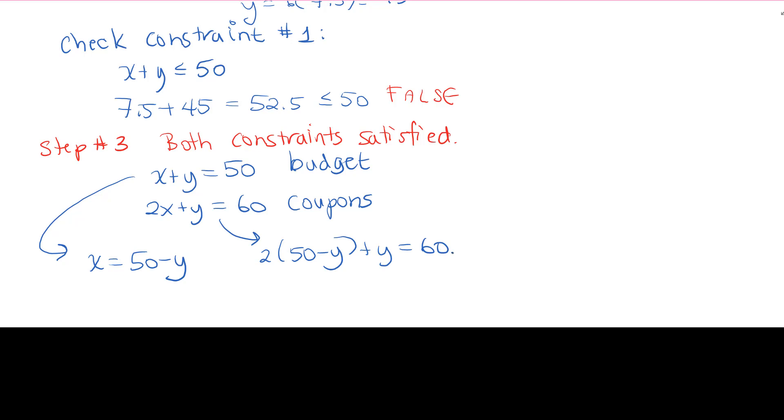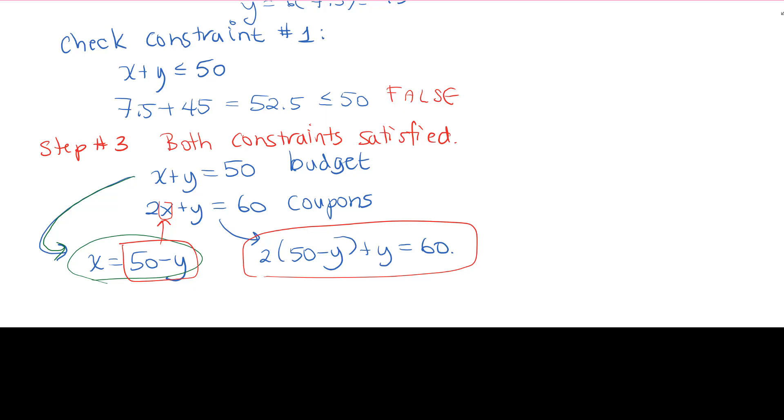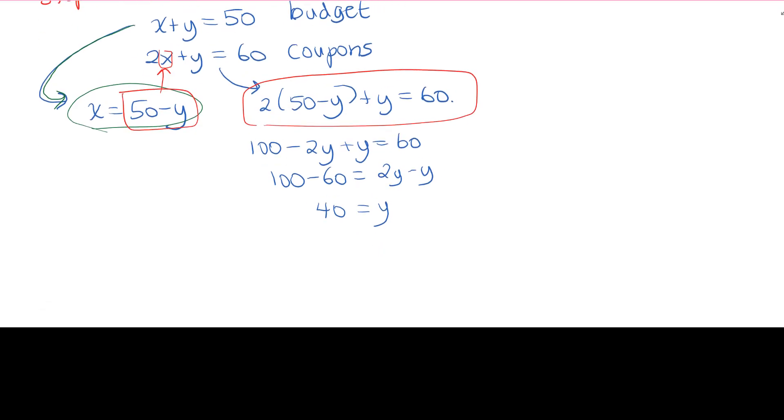And go solve for x and y. So in the first equation, I get x is equal to 50 minus y. And then I go substitute in that expression for x into the second equation. And I get 2 times 50 minus y plus y gives me 60. So that's 100 minus 2y plus y equals to 60. This gives 100 minus 60 equals to 2y minus y. 40 equals to y. And if 40 equals to y, that gives that x equals to 50 minus 40. x must equal to 10.